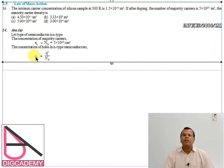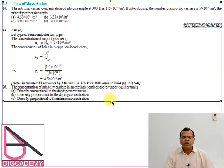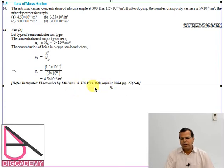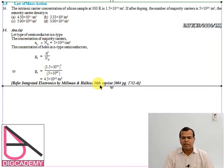Pn stands for the concentration of holes in an N-type semiconductor, and it equals Ni² / Nd. You just need to put the given values — the intrinsic carrier concentration and Nd — into this expression and you get the answer. I have also given the reference of the book after the solution of every question.